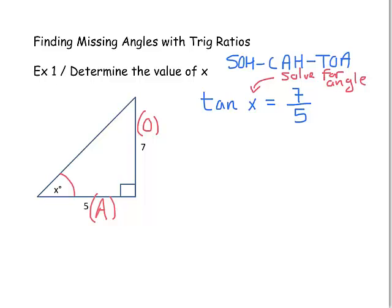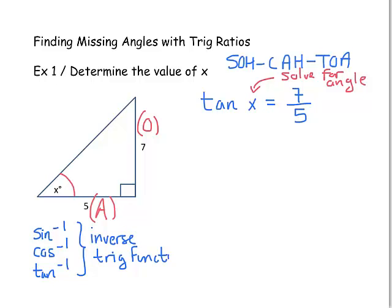If you look on your calculator above the sine, cosine, and tangent keys, you'll see sine with a little minus one, cosine with a little minus one, and tangent with a little minus one. Those are called the inverse trig functions. The way you say them is sine inverse, cosine inverse, and tangent inverse. It's important to write them accurately — not 'sine to the minus one,' but 'sine inverse.'